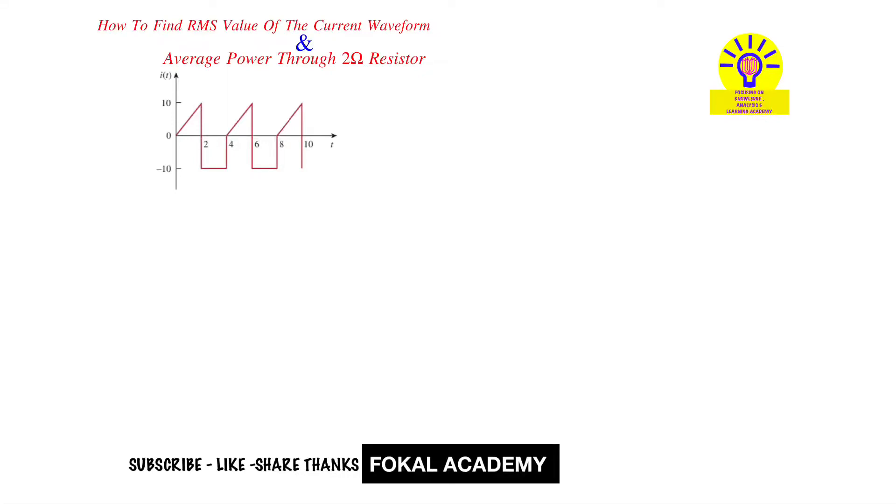Hi everyone, see this problem here. How to find RMS value of the current waveform, then how to find average power through 2 ohm resistor. In the problem, the current waveform is given. For that current waveform, find the RMS value. This current waveform was given to a 2 ohm resistor, then what is the average power through 2 ohm resistor? This is the problem.